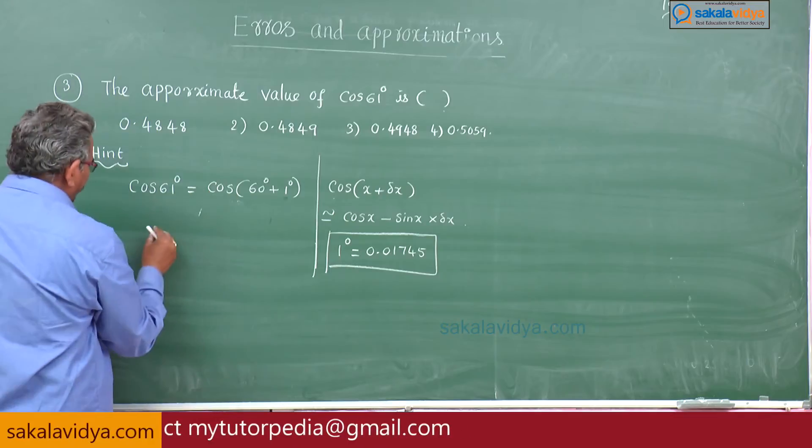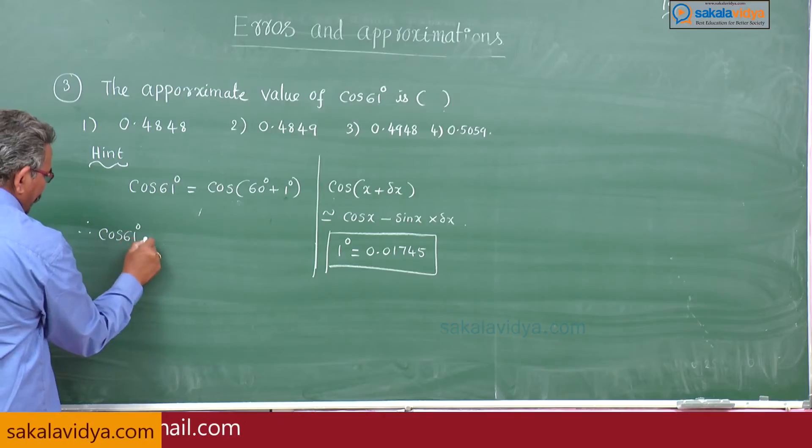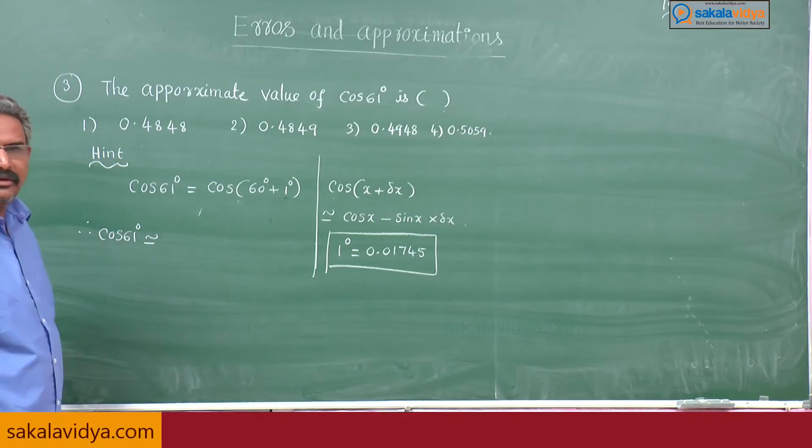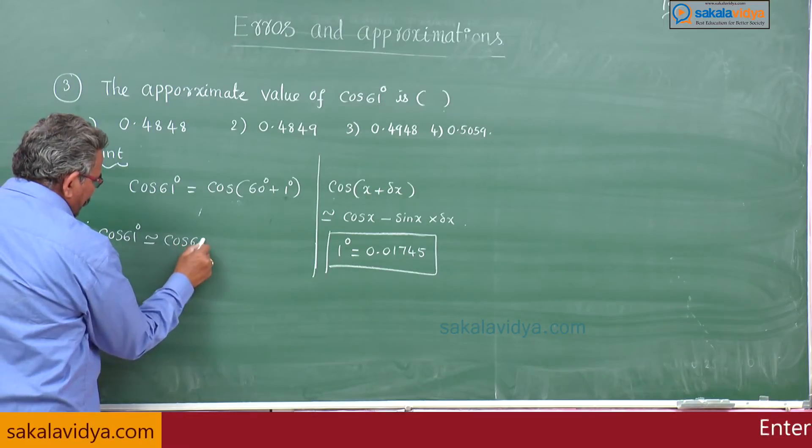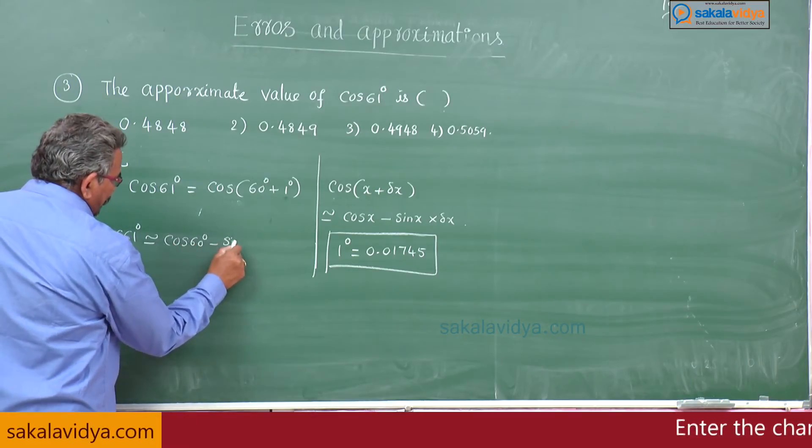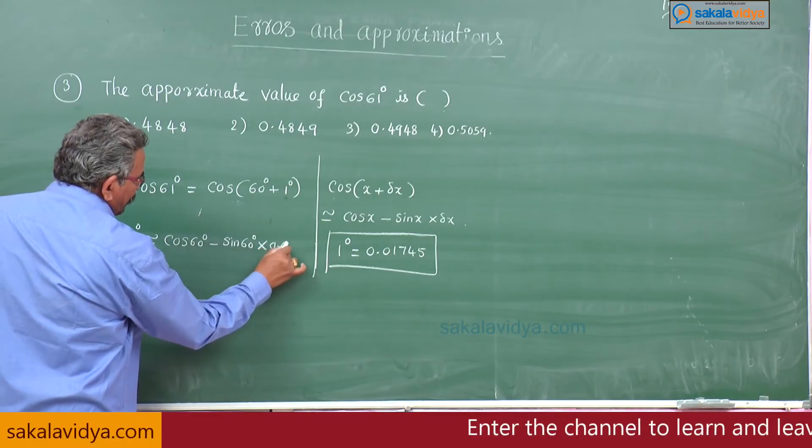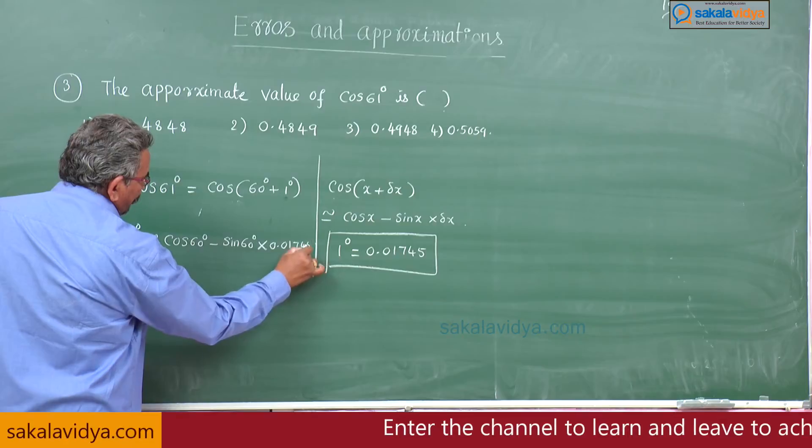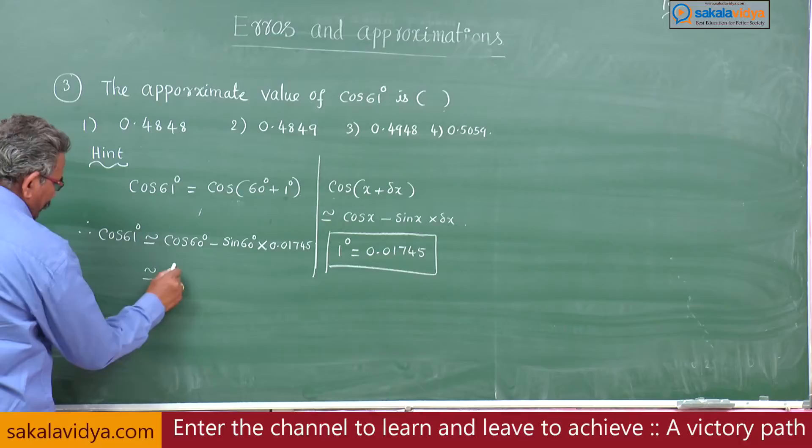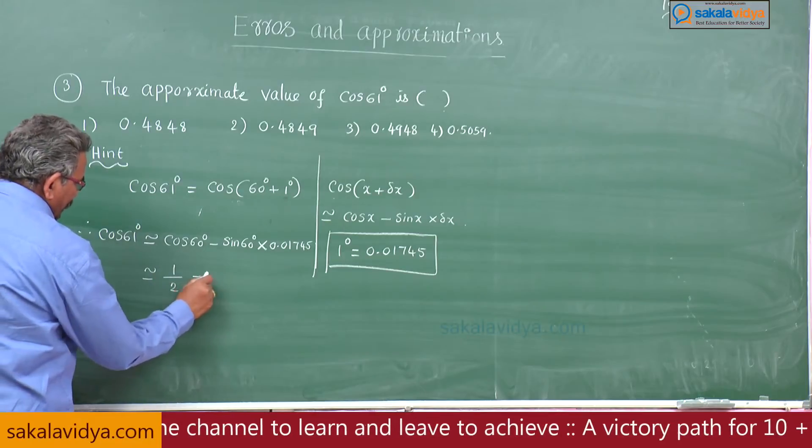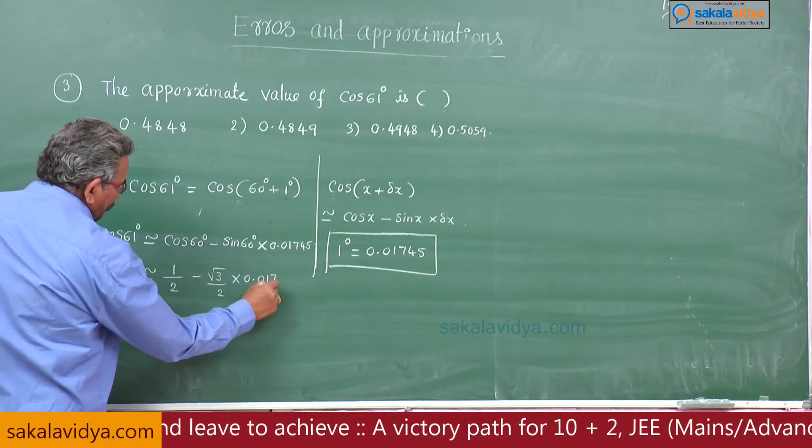Let us come to the problem now. Therefore, cos 61 degrees is approximately equal to cos 60 minus sin 60, delta x is 1 degree, that means 0.01745. Carefully we have to simplify. Cos 60 is 1 by 2, sin 60 is root 3 by 2 into 0.01745.